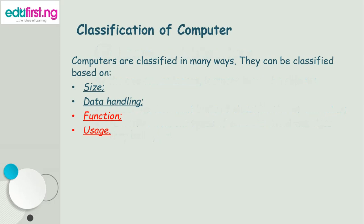Remember that in our previous class — Part 1 of our class on this topic — we mentioned that computers can be classified based on size, data handling, function, and usage. In Part 1, we treated classification based on size and data handling. In this Part 2, we'll be looking into the classification of computers based on function and usage.